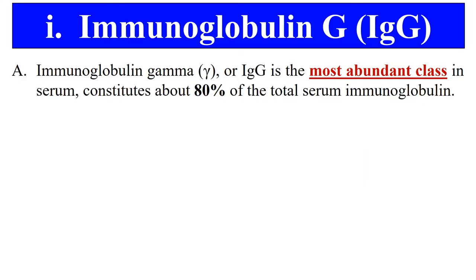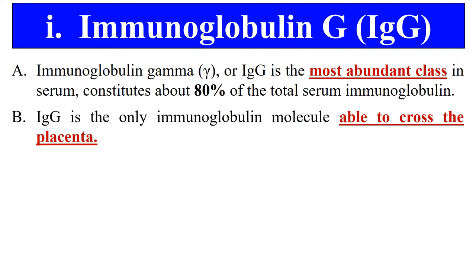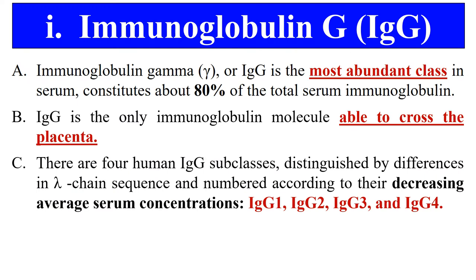The first class of immunoglobulin is IgG, that is immunoglobulin G, and it is the most abundant class of antibody in the serum. It constitutes about 80% of total serum immunoglobulin, and it is the only class of immunoglobulin which can cross the placenta — meaning it is transferred from mother to newborn or mother to fetus.